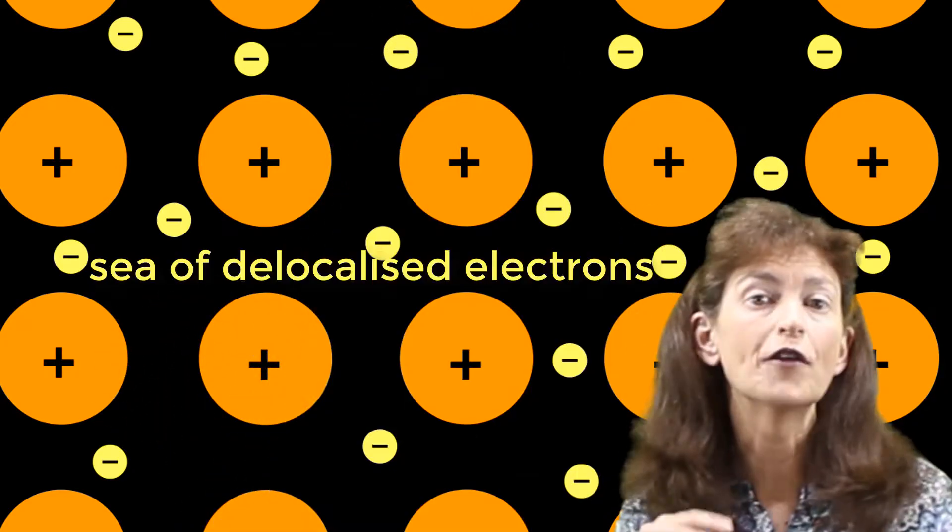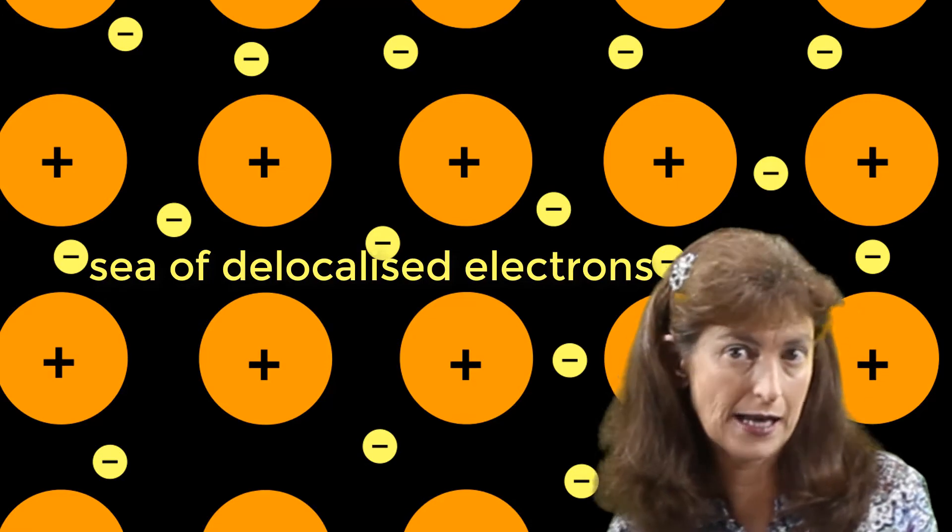Well then what happens is, all the metals donate those valence electrons to a communal, what we call sea, of delocalized electrons.